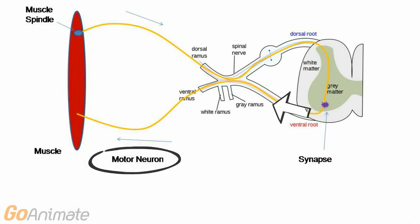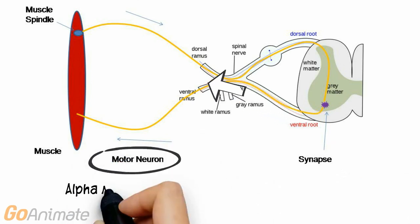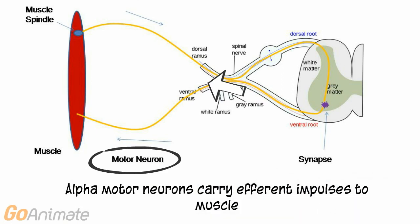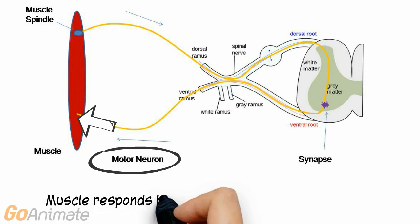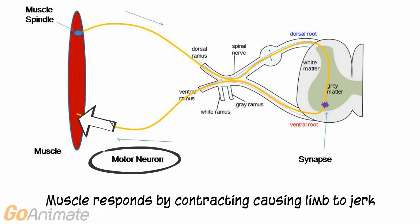The alpha motor neurons carry efferent impulses to the muscles. The muscle responds by contracting, causing the limb to jerk.